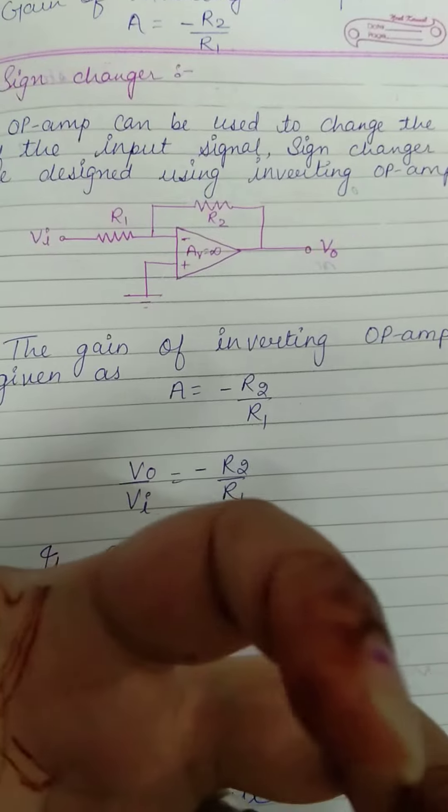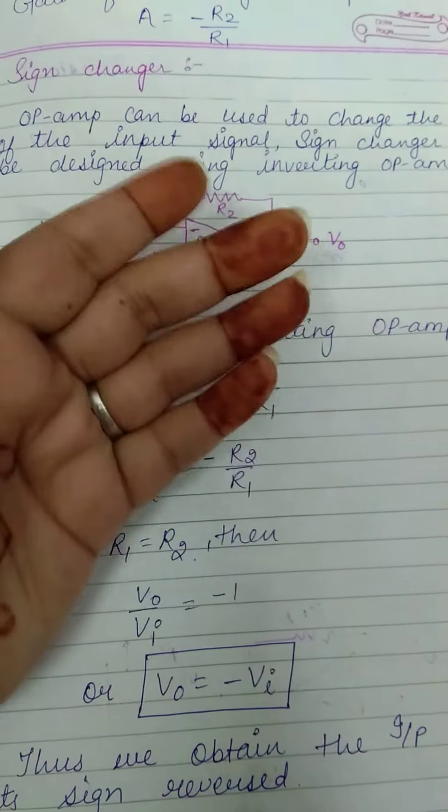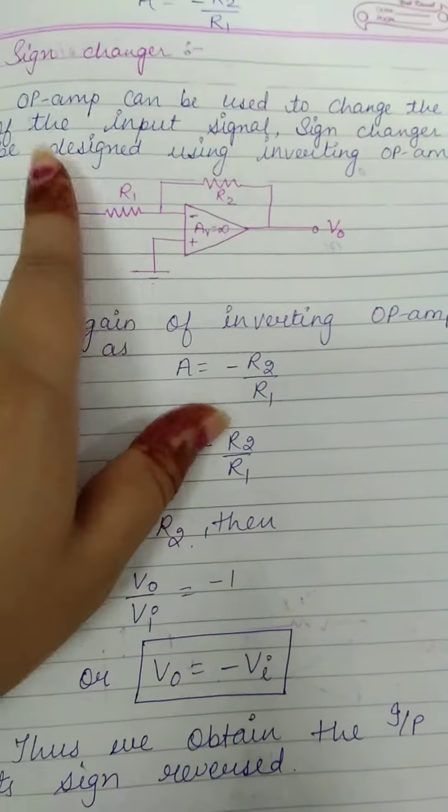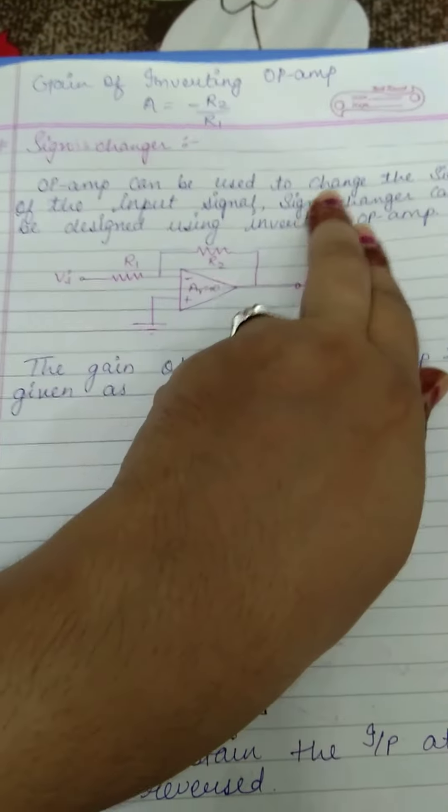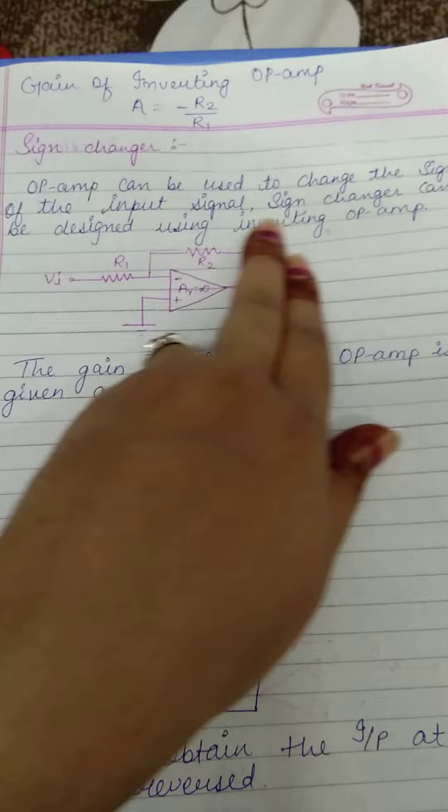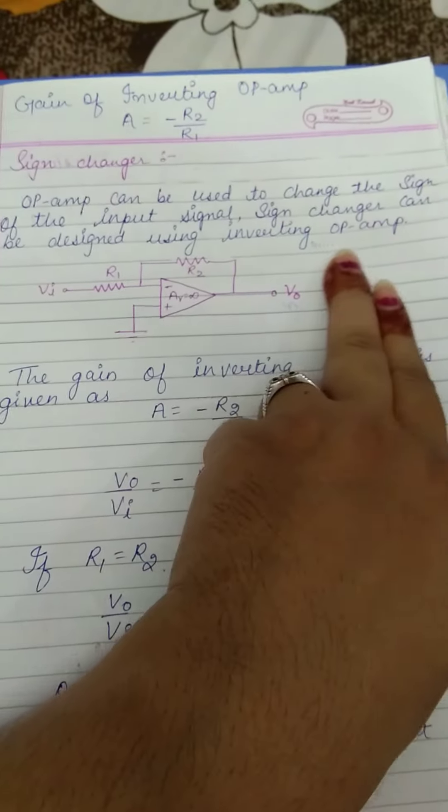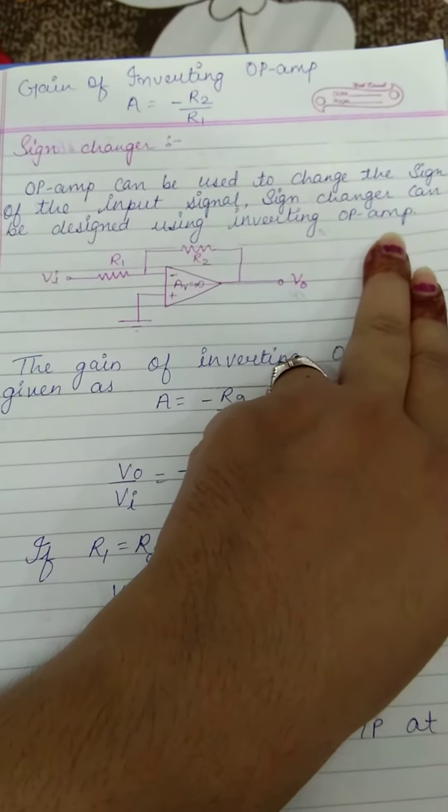We have a signal that we have to change, so we can use a sign changer for that. Op-amp can be used to change the sign of the input signal. Sign changer can be designed using inverting op-amp.